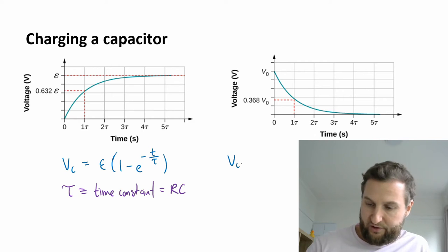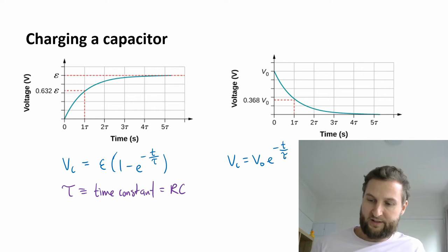This discharge has a similar equation. We can say that we start at v-naught, and then it's just e to the minus t over tau.